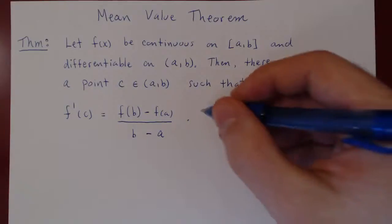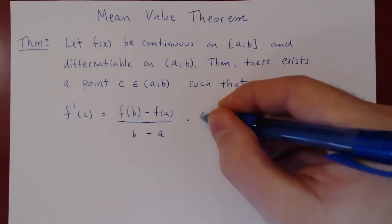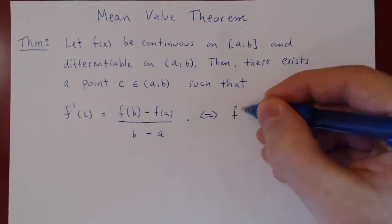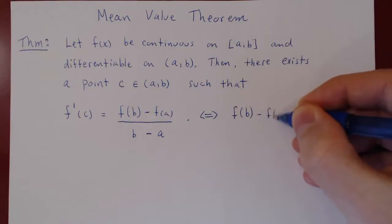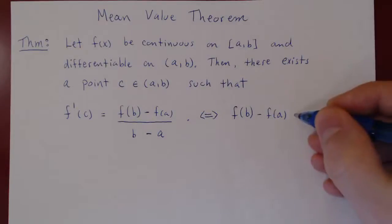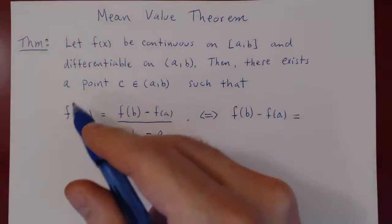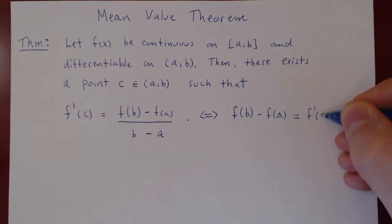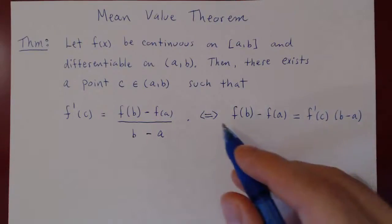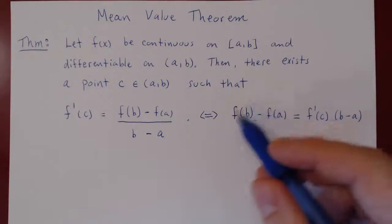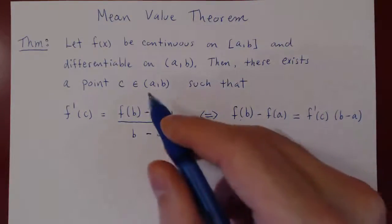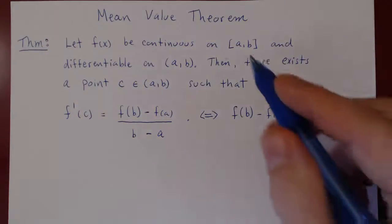That is the Mean Value Theorem. You can also rewrite the conclusion by multiplying across by b minus a, so you'll see that f(b) minus f(a) — the total change in y over the interval from x equals a to x equals b — equals the derivative of the function at some point between a and b, times the change in x, b minus a.